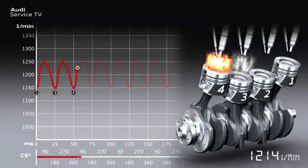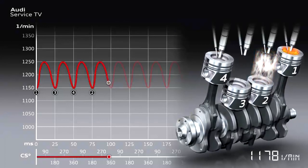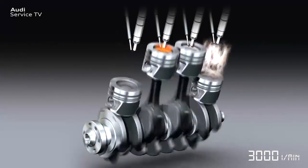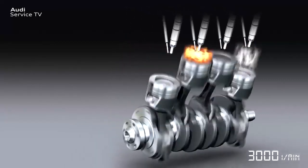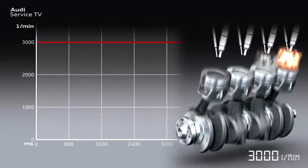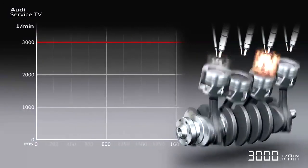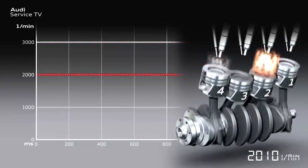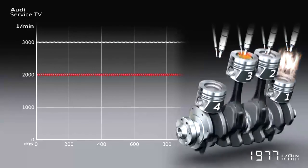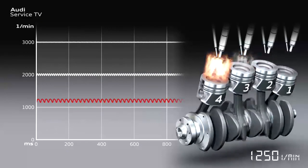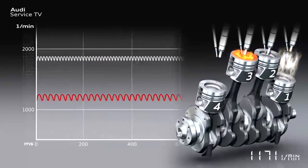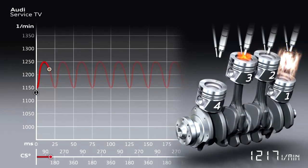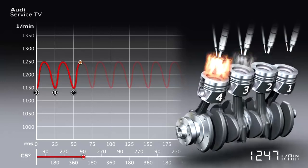A four-cylinder, four-cycle engine has a firing interval of 180 degrees, meaning that two work cycles take place during one crankshaft revolution. For example, if the four-cylinder engine runs at 3,000 rpm, there are 6,000 ignitions per minute, corresponding to 100 ignitions per second — so the rotational speed irregularities are very slight. The lower the engine speed, the clearer the rotational speed irregularities appear as torsional vibrations. At 1,200 rpm, there are approximately 40 ignitions per second, meaning a work cycle only occurs every 25 milliseconds, and the torsional vibrations are very marked in this range.